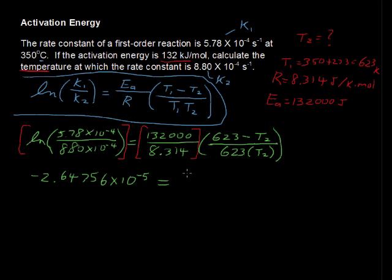negative 2.64756 times 10 to the negative 5th. And that equals, now still on the left-hand side after we've taken this and divided by this ratio. So we have still 623 minus T sub 2 over 623 times T sub 2. If math is not a problem for you, then you've already blown past this and gotten the answer.